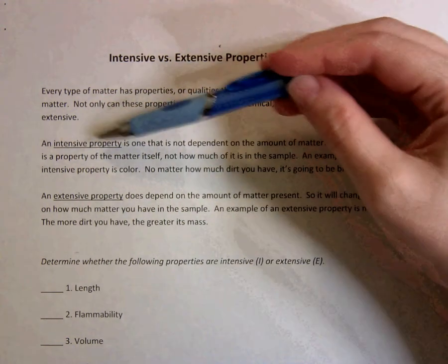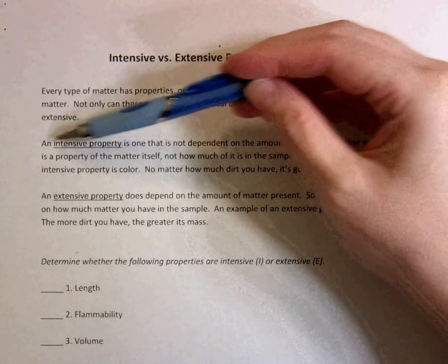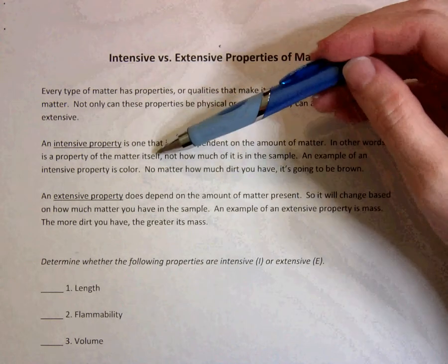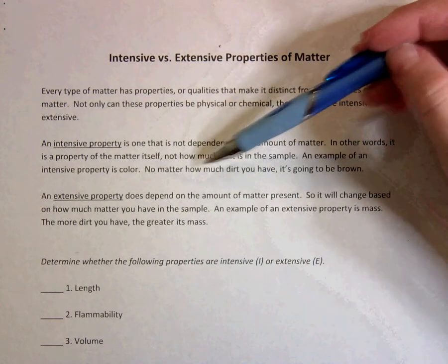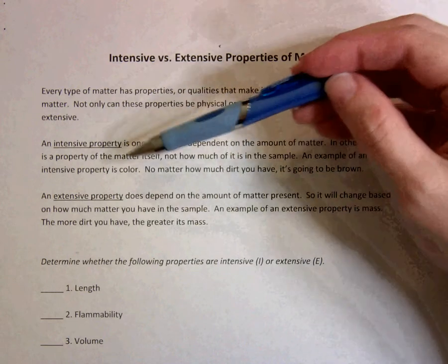An intensive property is a property of the substance in and of itself. That means that the matter itself has the property, not how much of the matter it is. It has nothing to do with how much you have, but only the substance itself.